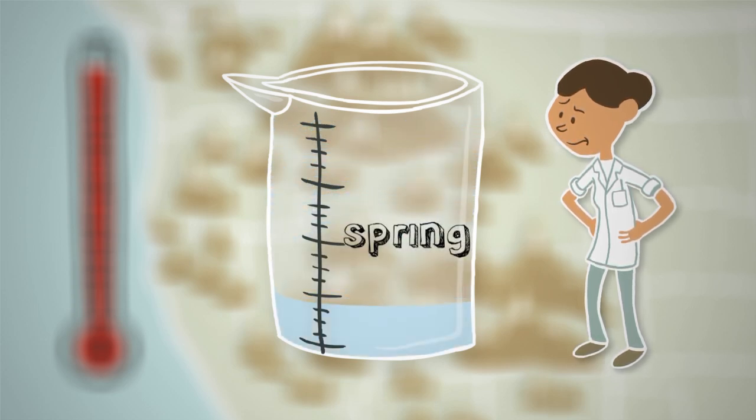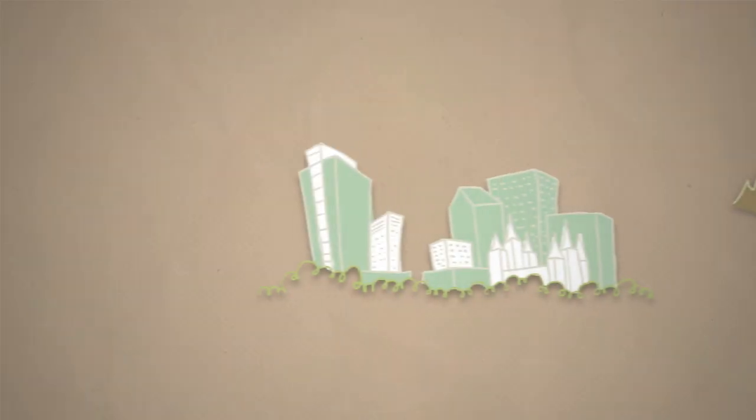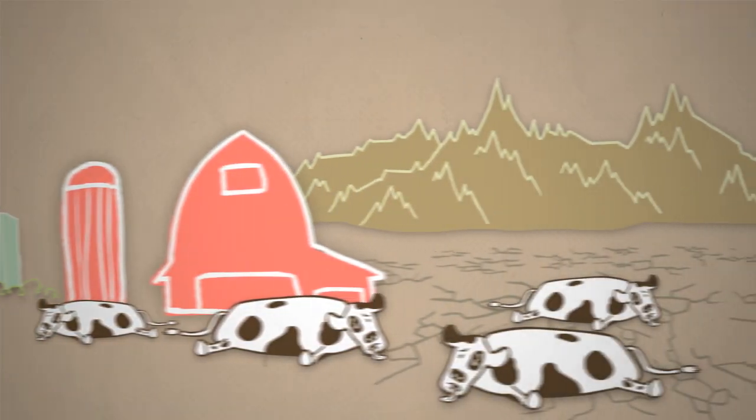This leaves less water for the hottest, driest months of the year, July and August, when cities, cattle, and farmers' fields are the thirstiest.